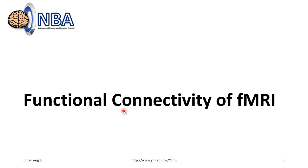Now we will talk about the basic idea and the principles behind functional connectivity for fMRI. You can also apply this functional connectivity approach for several different modalities such as EEG, MEG, or fNIRS. fNIRS, functional near-infrared spectroscopy, is another approach that measures blood oxygenation level in vivo. If you have temporal profiles or temporal signals on hand, you can measure the dependence between several different temporal signals. Functional connectivity is very handy and useful for most temporal signal analysis.